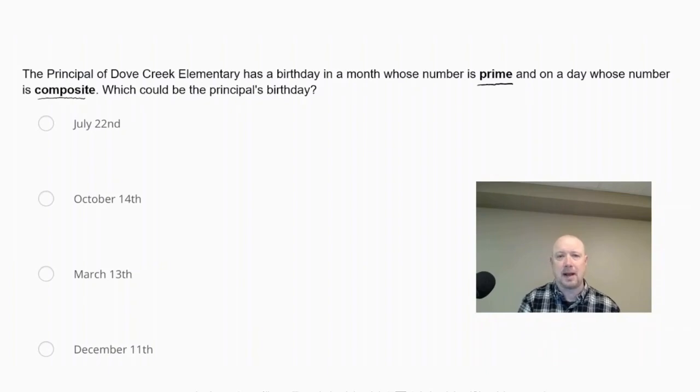So a prime number, its only factors are 1 and itself. And our composite numbers are going to be the numbers that are not prime. So for example, any even number is a composite number because it has a factor of 2. So what I'm going to do here is let's list the dates numerically. So July 22nd would be 7-22, October 14th would be 10-14, March 13th would be 3-13, and December 11th would be 12-11. The month has to be prime. So that means if the month number has to be prime, we're going to eliminate any of the composite numbers for the month. So 10 is an even number, so that's composite, so October 14th is eliminated. December 11th is eliminated because 12 is a composite number.